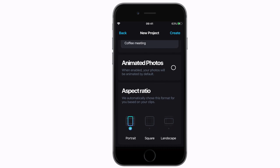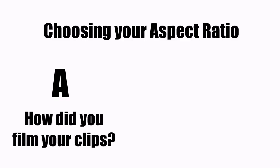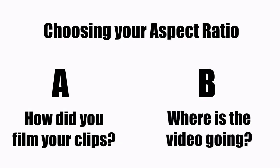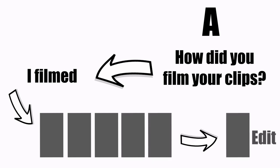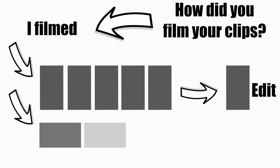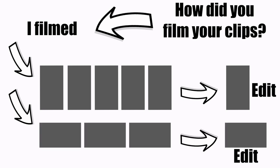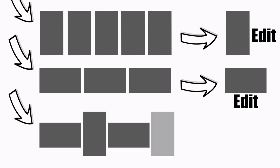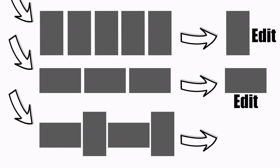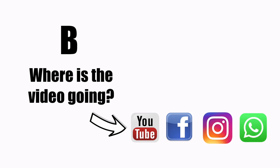Third, choose your aspect ratio. You have a choice to make a portrait video, square video, or a landscape video. Choosing this will depend on two things: A, how did you film most of your clips? And B, where do you want to place your finished video? If you filmed all your clips in portrait mode, then edit your project in portrait. If you filmed landscape, then edit landscape. Do this regardless of what you want the final outcome to be — you can always edit the final shape afterwards. If you have a mix of different clips — please avoid this because it's absolutely terrible — then choose based on the final platform where you'd like to publish your video.